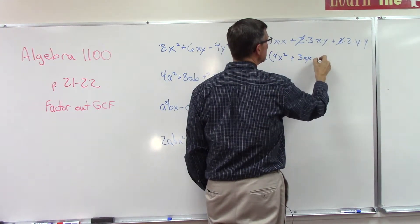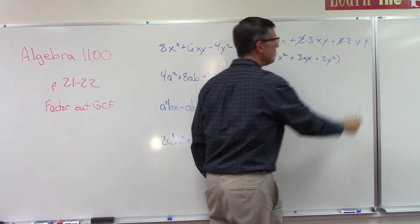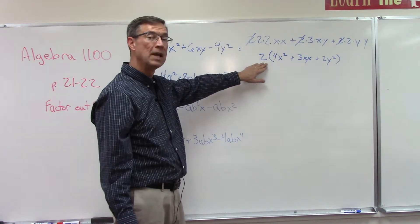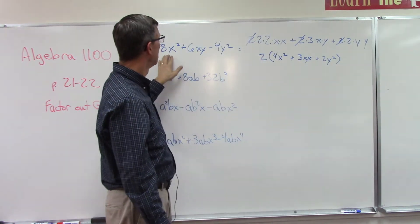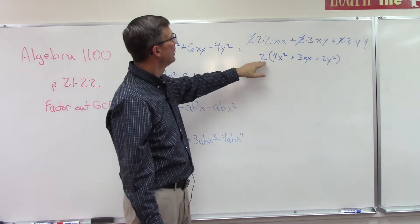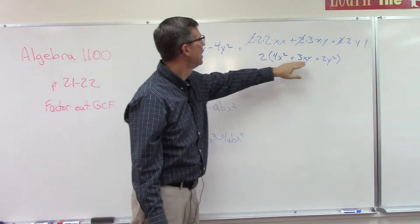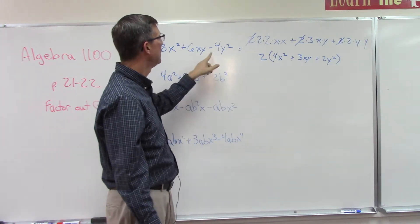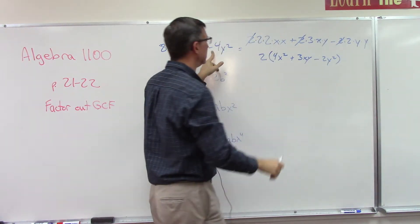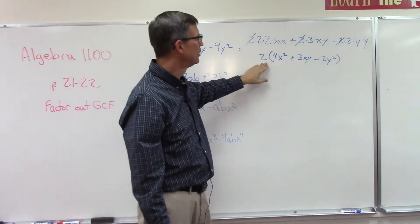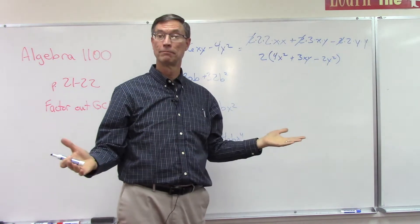Let's simplify: 2 times 2 is 4, x times x is x squared — I'm left with 4x squared. Then 3xy. And then 2y squared. So I've taken a 2 out of all three terms and pulled it out front. I can check my work by doing distributive property: 2 times 4x squared gives 8x squared; 2 times 3xy gives 6xy. Oops — this should be minus; 2 times negative 2y squared would indeed be negative 4y squared.